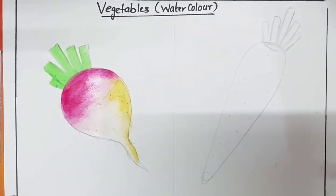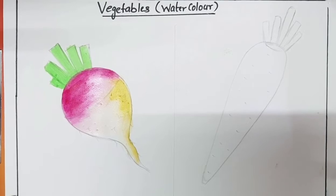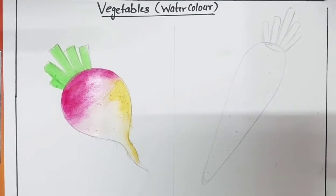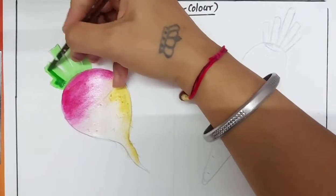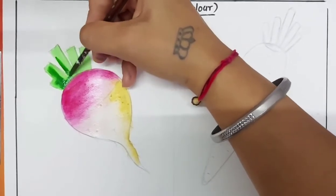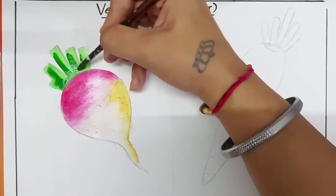Now add dark green color for the tail like this.